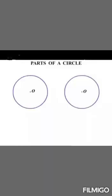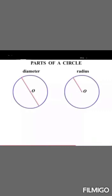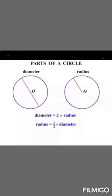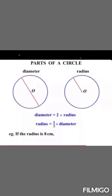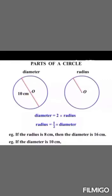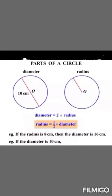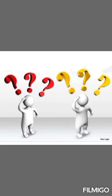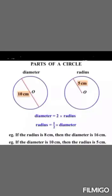Now we draw two same circles — to draw a radius in one circle and a radius in another circle. Then write the formulas. First question: if the radius is 8 cm, can you guess the diameter? Then the diameter is 16 cm. Second question: if the diameter is 10 cm, can you guess the radius? Then the radius is 5 cm.